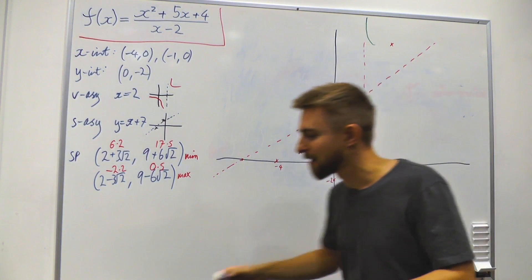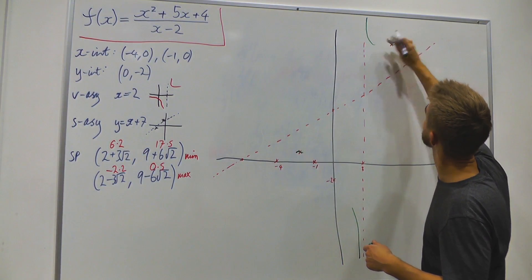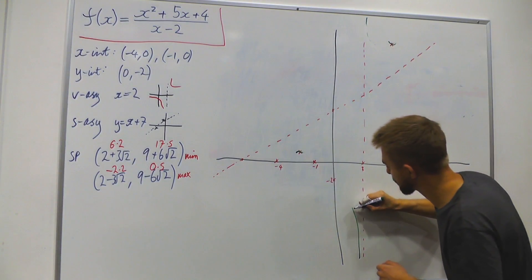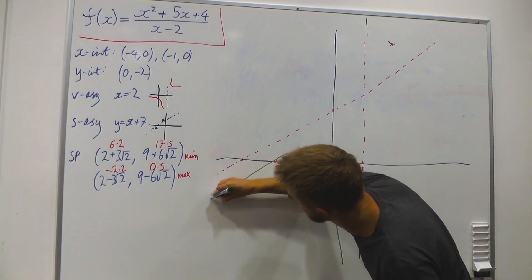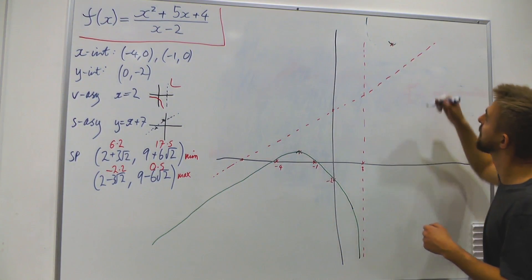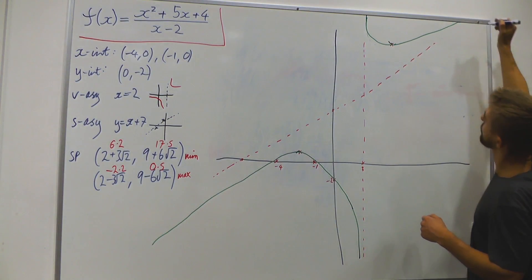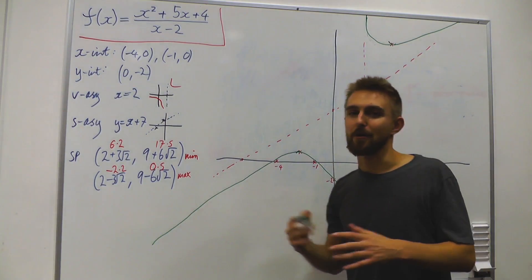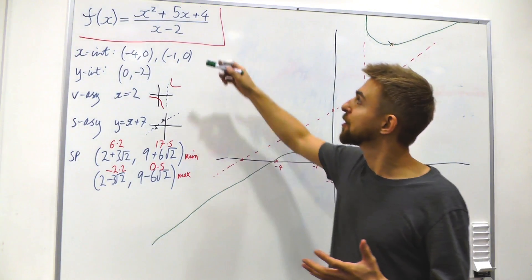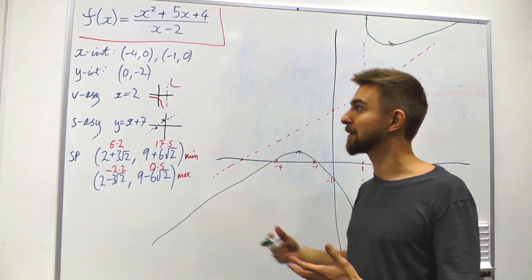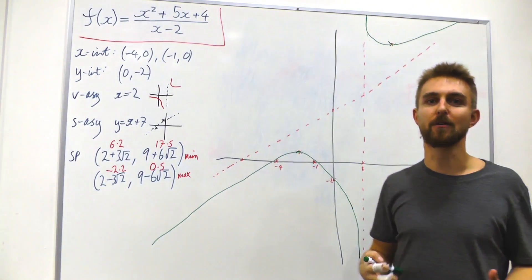With all the information marked, we draw the curve: coming up through the intercepts, reaching the maximum near (−2.2, 0.5), then down and tending toward the slant asymptote; and on the right branch, coming down through the minimum near (6.2, 17.5) and tending toward the slant asymptote. We've taken a complicated function, run through a few simple procedures, and finished up knowing everything there is to know about it.